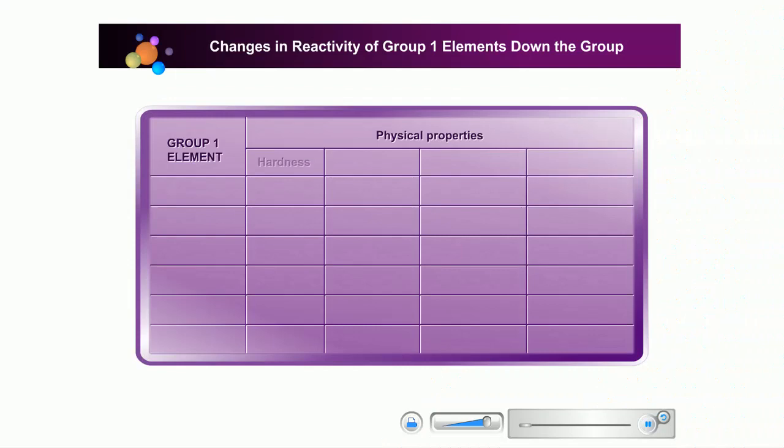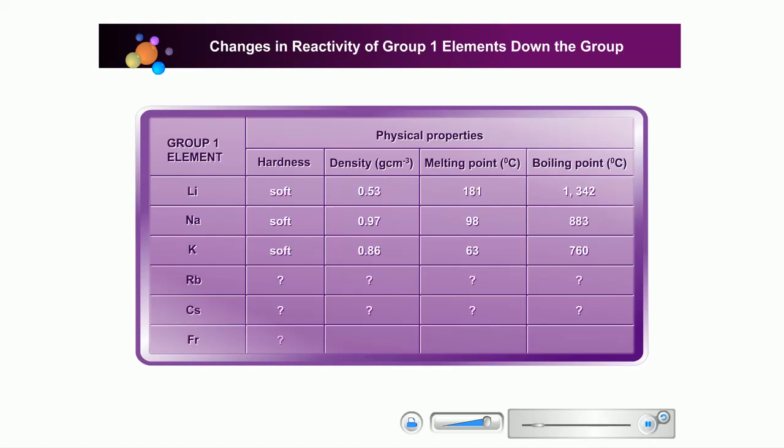From the previous lesson, you have learned the physical properties and the chemical reactions. Can you predict the physical properties of rubidium, cesium, and francium?